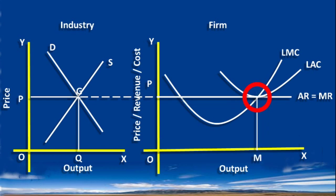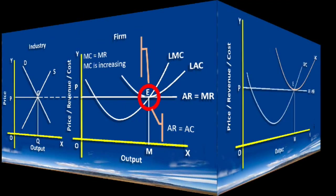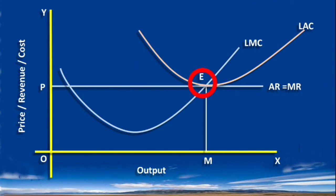Marginal cost is equal to marginal revenue. The firm is earning normal profit because average revenue is equal to average cost. In the long run, all the firms under perfect competition will be earning only normal profit. There will be no tendency for new firms to enter the industry or for existing firms to leave the industry.